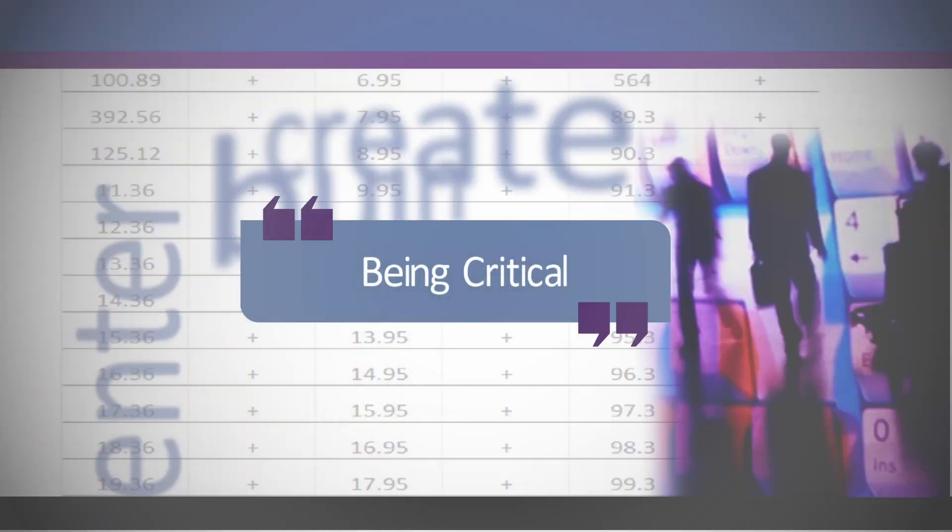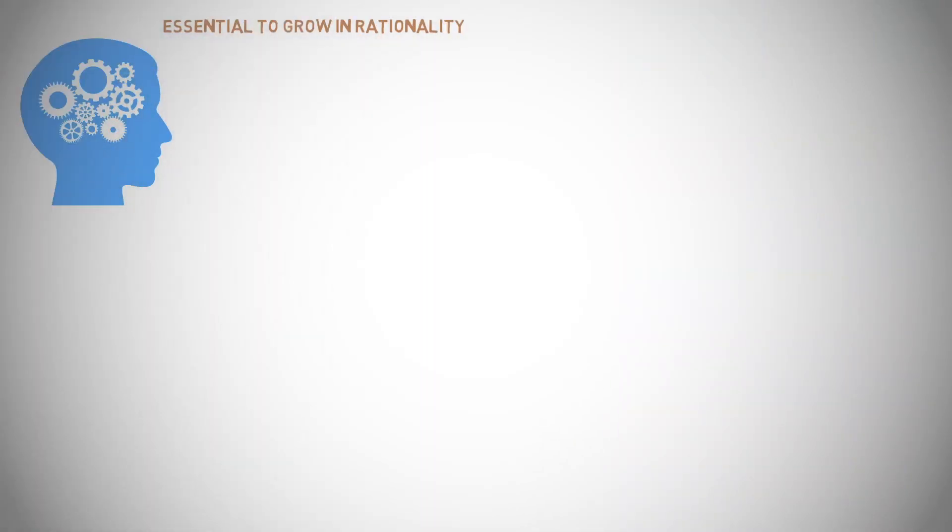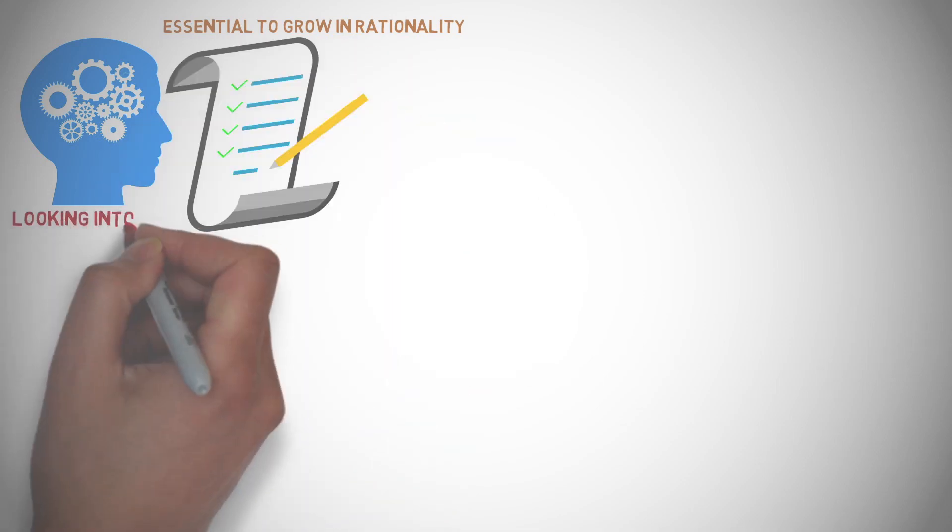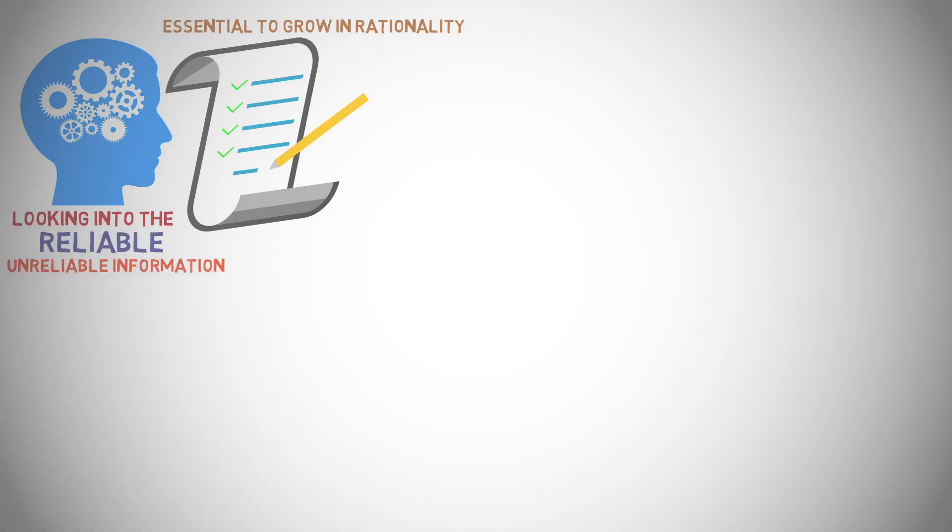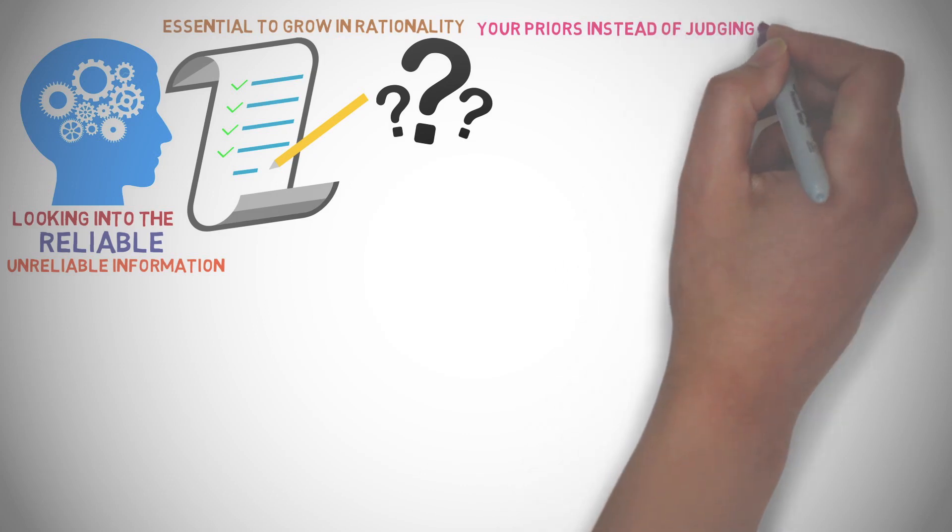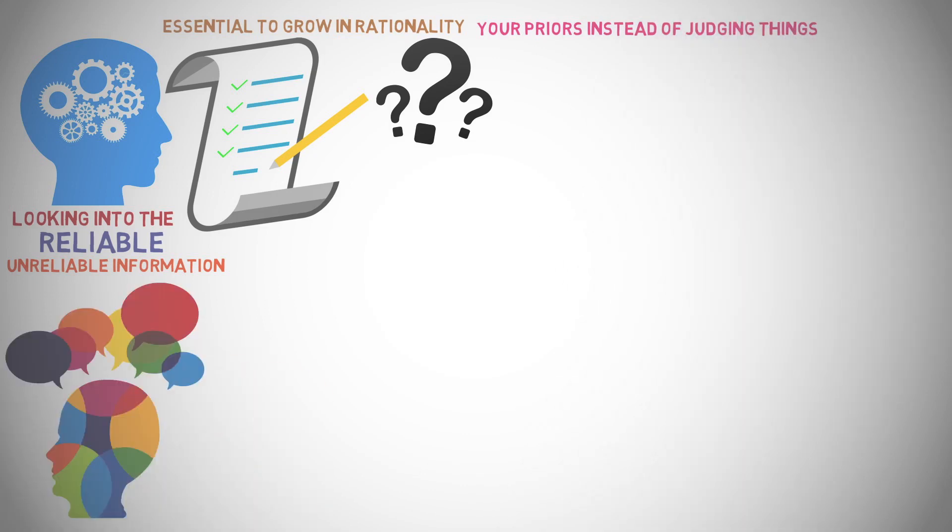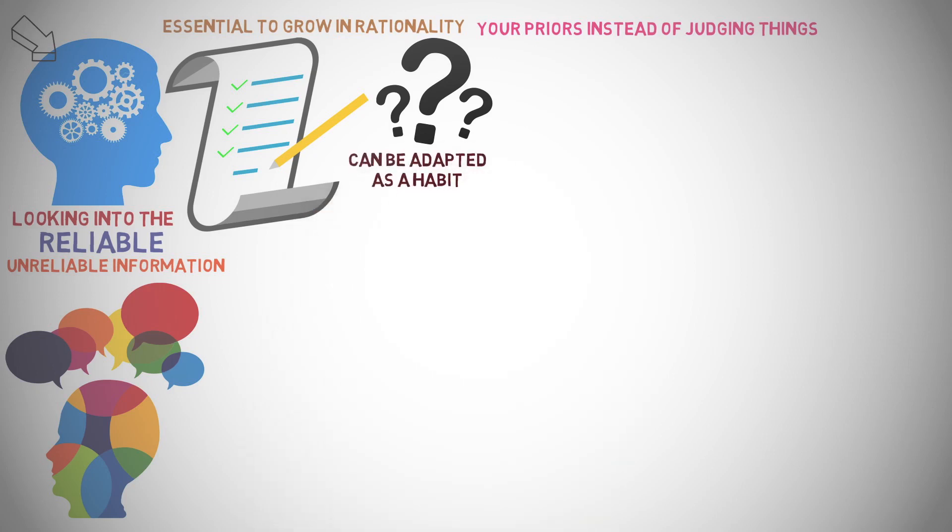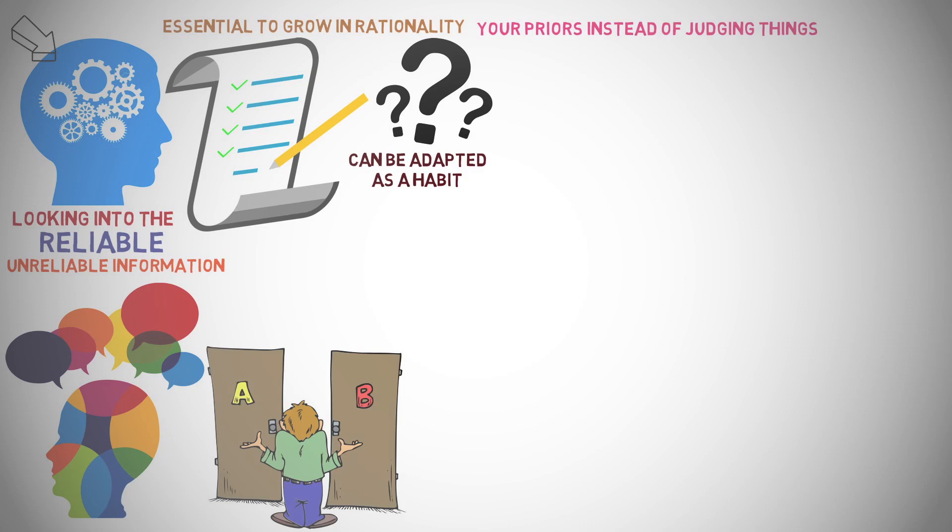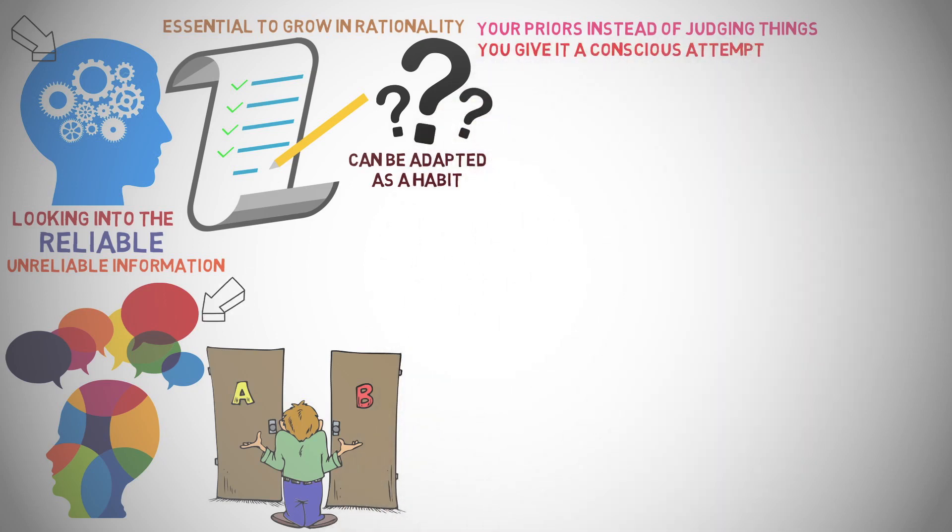Being critical. Critical thinking is essential to grow in rationality. It helps you get to the right conclusions having considered different aspects of the matter by looking into the reliable and unreliable information. You are required to question your priors instead of judging things right away on the basis of your assumptions. The skill of thinking critically can be adapted as a habit. Once you form critical approach as your habit, you will ensure to explore every potential aspect of the matter before reaching the conclusion.